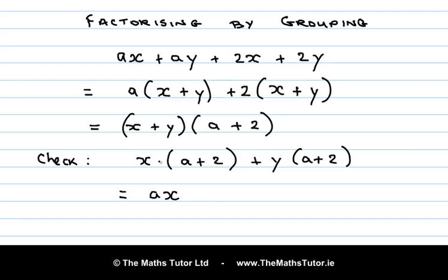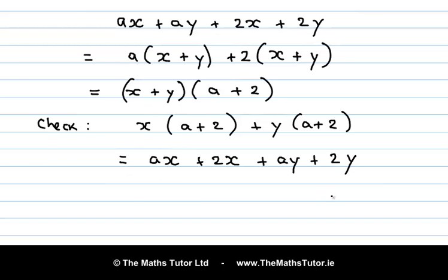And x by 2 is plus 2x. Plus y by a is plus ay. Plus y by plus 2 is plus 2y. If we rearrange that, we get back to what we had originally. So we started off with the four term expression. We factorized it, and then we expanded those factors just to check, and we arrived back at the original expression.